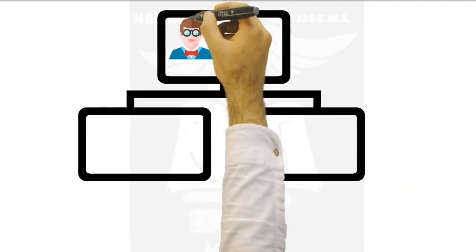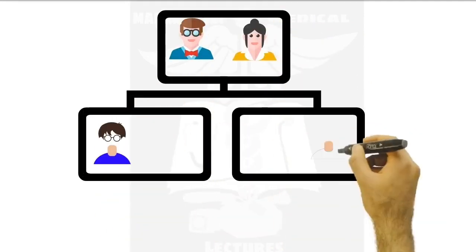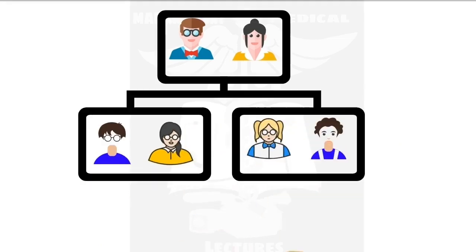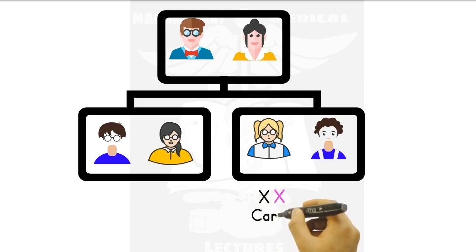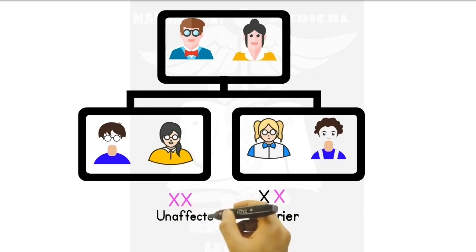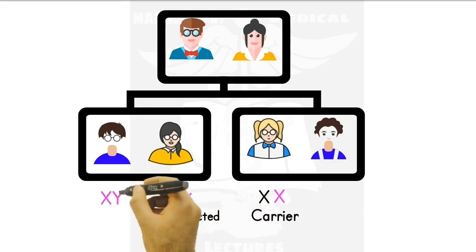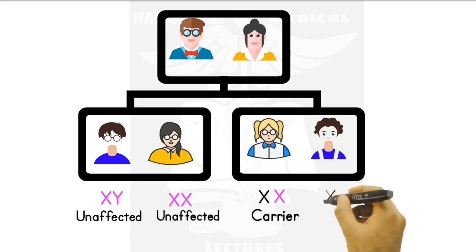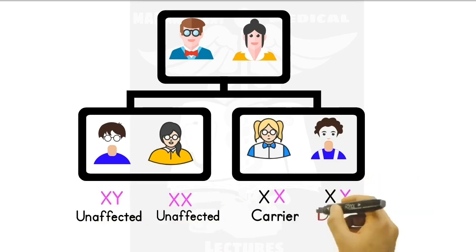If we look at the offspring, this partnership will potentially have two males and two females. The mutated X and healthy X from the father will form a female, but this female does not have to have muscular dystrophy — she can be a potential carrier, with a 25% chance of becoming a carrier, and this typically happens in females. We also have an unaffected female, an unaffected male, and finally the male with the mutated X from the mother can possibly have Duchenne muscular dystrophy.